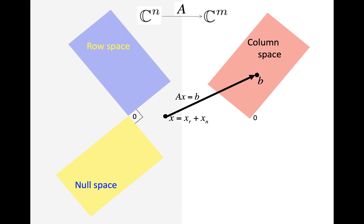What that means is that the vector x can be uniquely written as the sum of a vector in the row space, x_r, and a vector in the null space, x_n. And we know that the vector x_n maps to the zero vector in Cm.